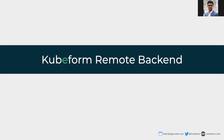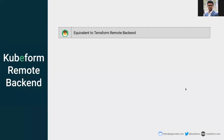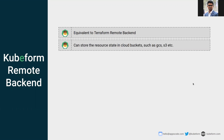QFirm Remote Backend is one of the latest features of QFirm. It is equivalent to Terraform Remote Backend. In Terraform and also in QFirm, there are two types of backend: local and remote. The default is local backend, where the resource state is stored under the spec.state of the QFirm resource YML. Using a QFirm Remote Backend, we can store the resource state in cloud buckets and use it from that stored location.